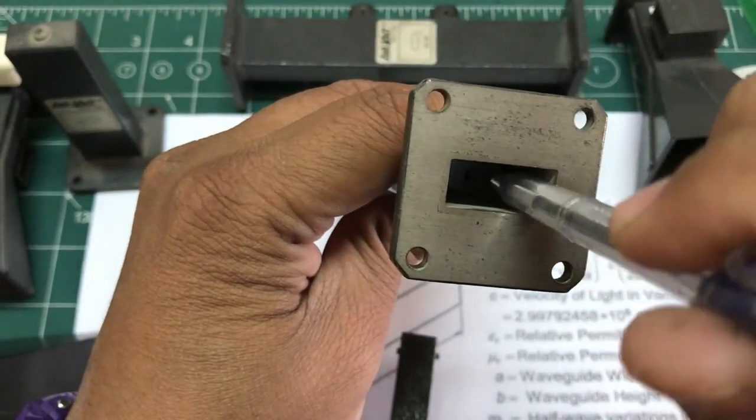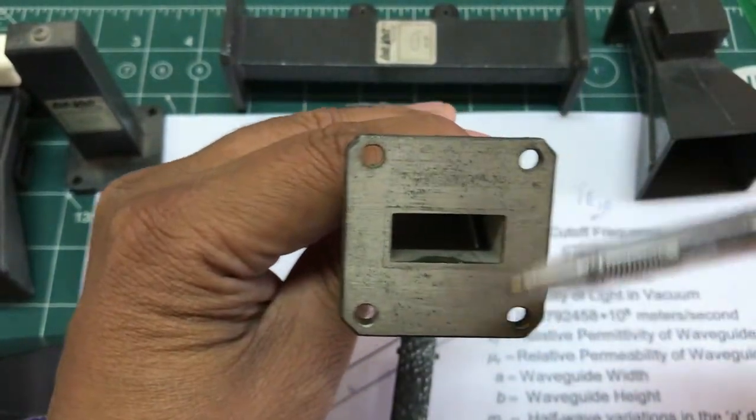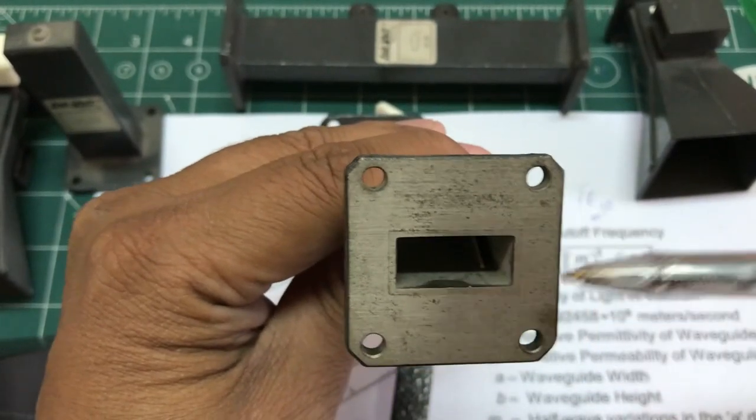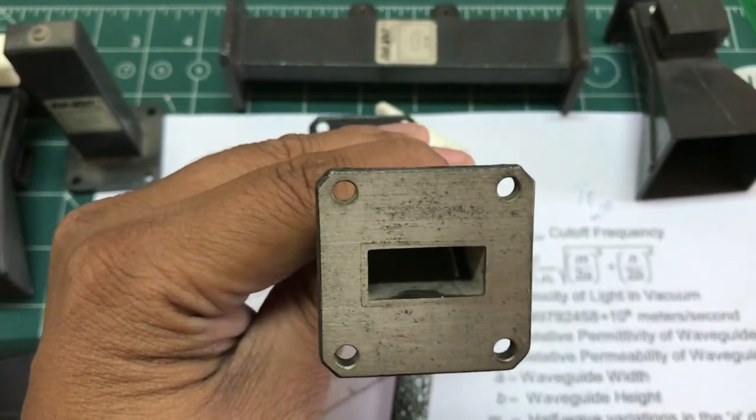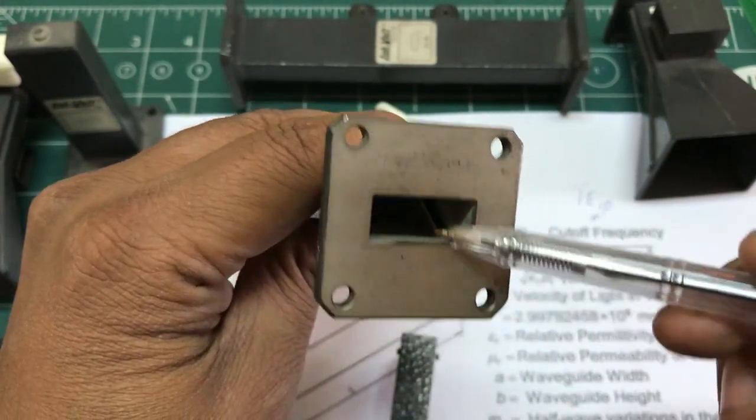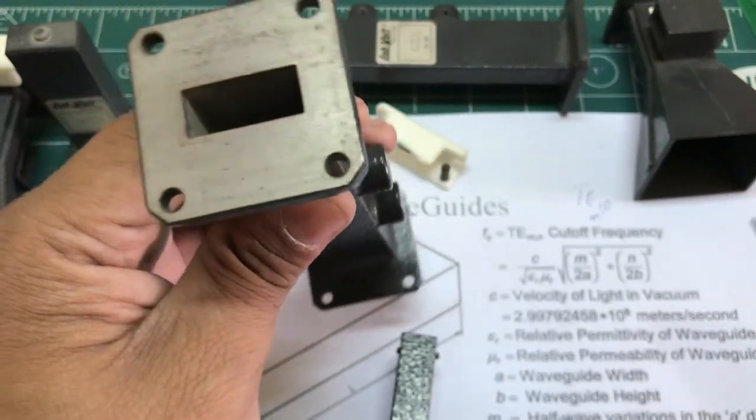This thing has some extra structure that is providing 6dB attenuation. We're making a change in the geometry of this, but the dimension remains the same. Inside of this waveguide we're introducing some extra geometry based on that it is giving 6dB or 30dB attenuation.